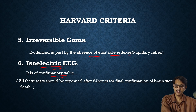This test should be repeated after 24 hours for final confirmation of brain stem death. According to Harvard's criteria, when these tests are repeated after 24 hours and done twice, only then is the person considered brain stem dead.